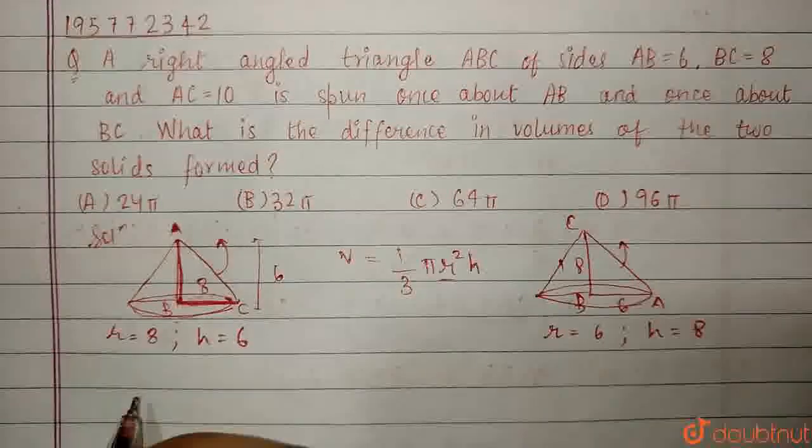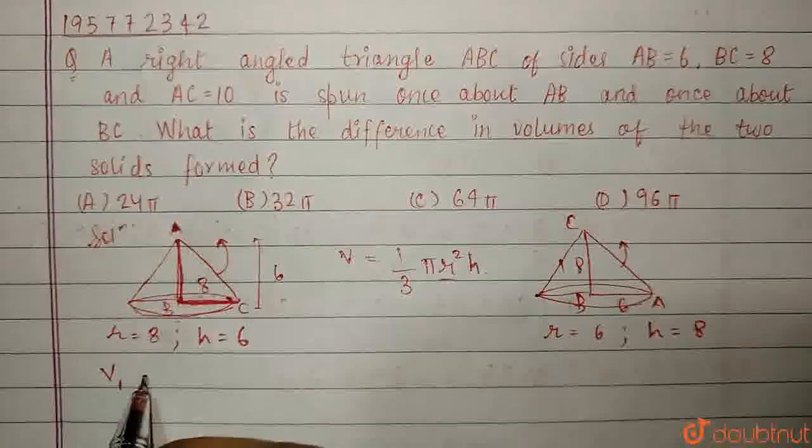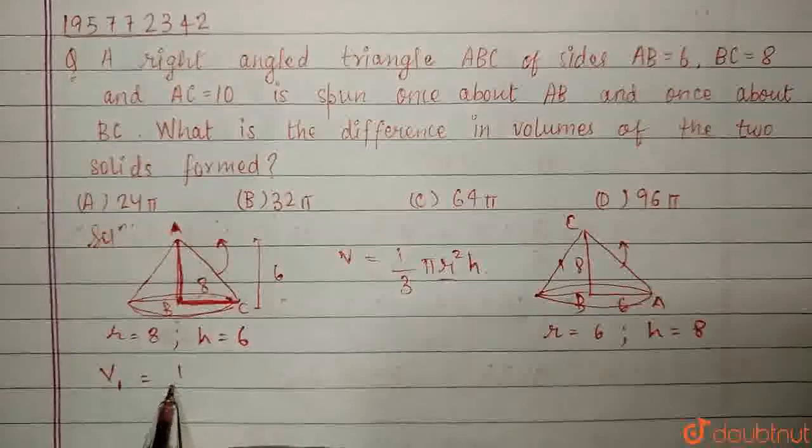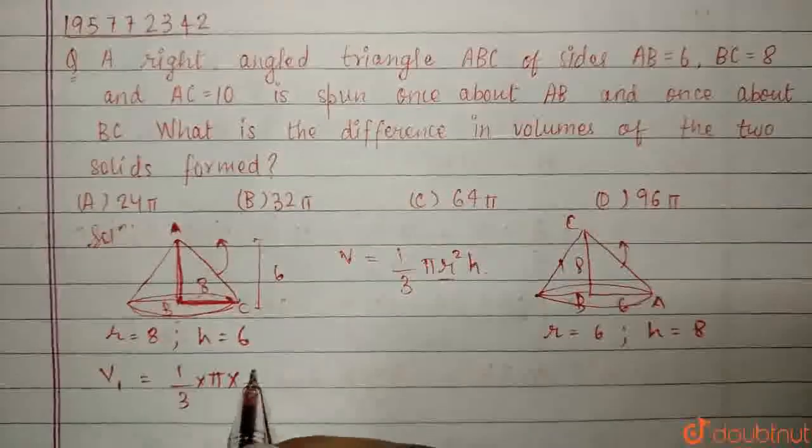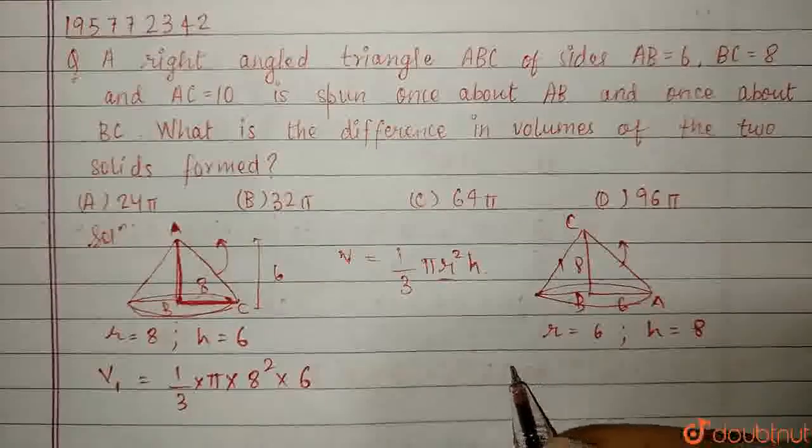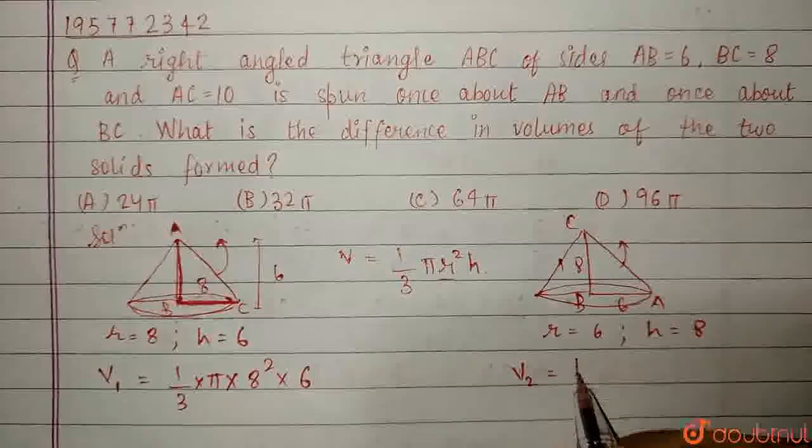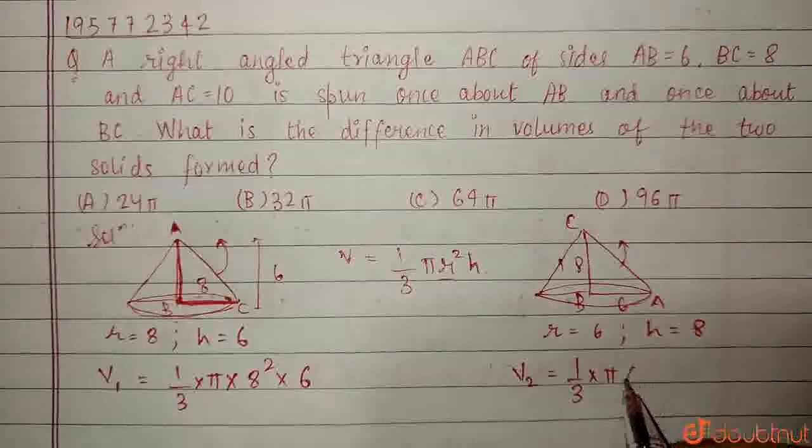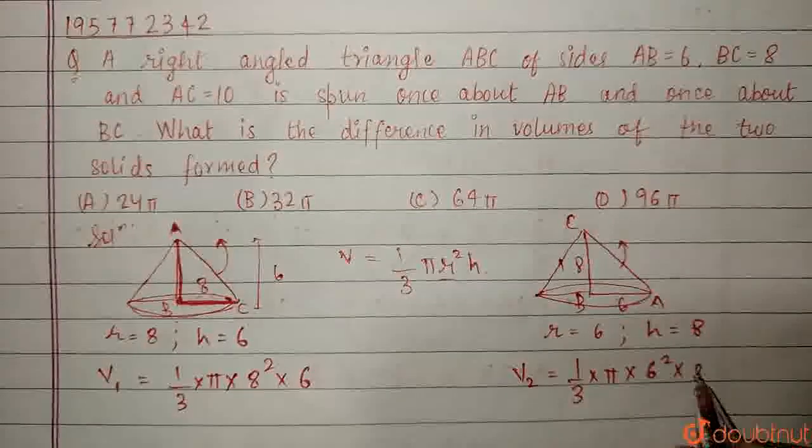I will apply the volume 1 formula, that is 1 by 3 into pi into r is 8 square into h is 6. Applying the formula here also, v2 equal to 1 by 3 into pi into 6 square into 8.